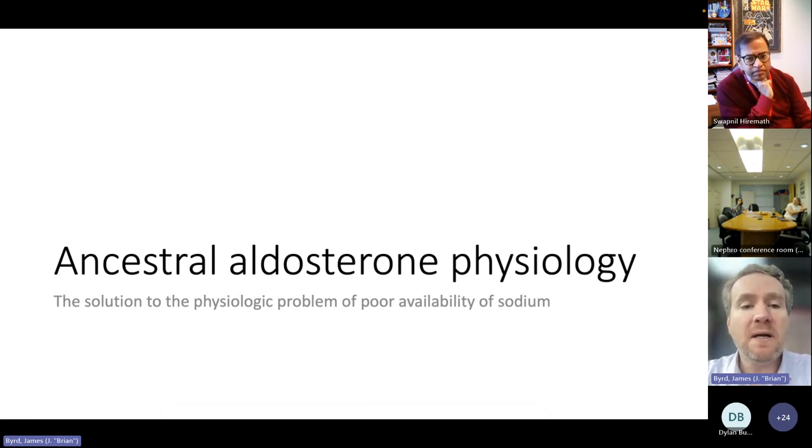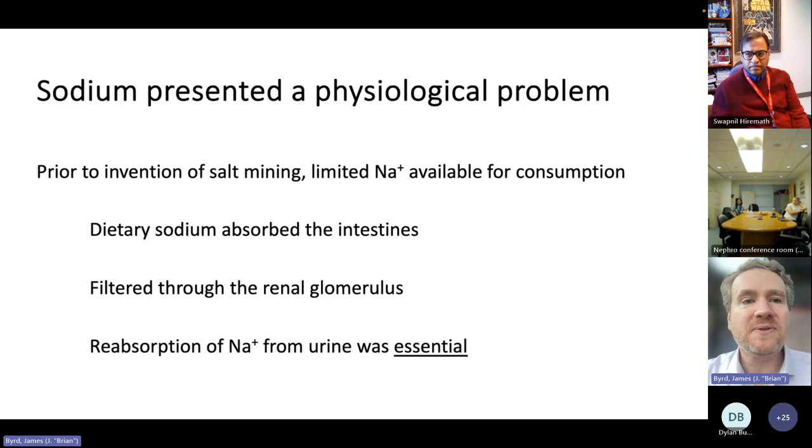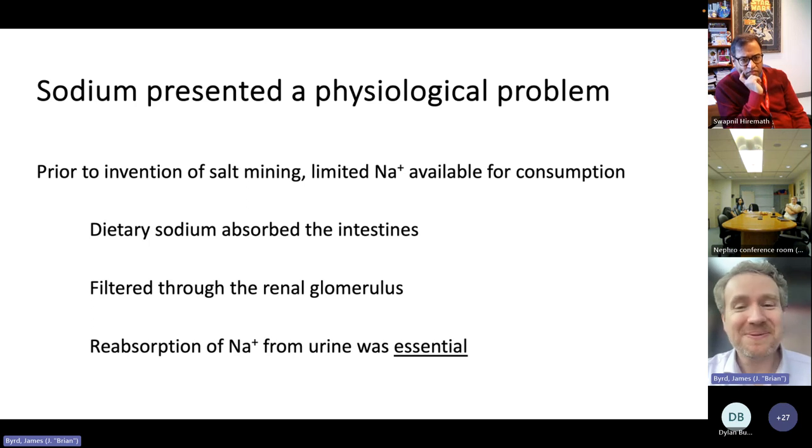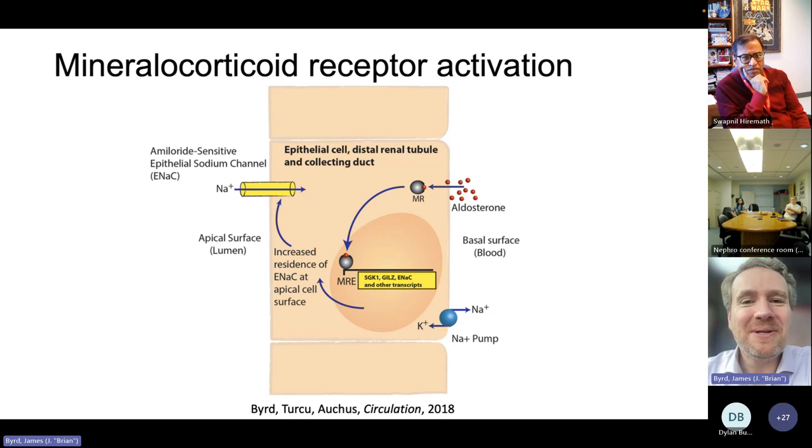In terms of aldosterone physiology in the ancestral sense before the salt mining invention, you can think of aldosterone as having been a solution to the physiologic problem of poor availability of sodium and poor retention in the body. Sodium was an essential aspect of action potentials and other aspects of human physiology, but it was limited in its availability for consumption. Dietary sodium is absorbed through the intestines, filtered through the renal glomerulus, and reabsorption from the urine was absolutely essential.